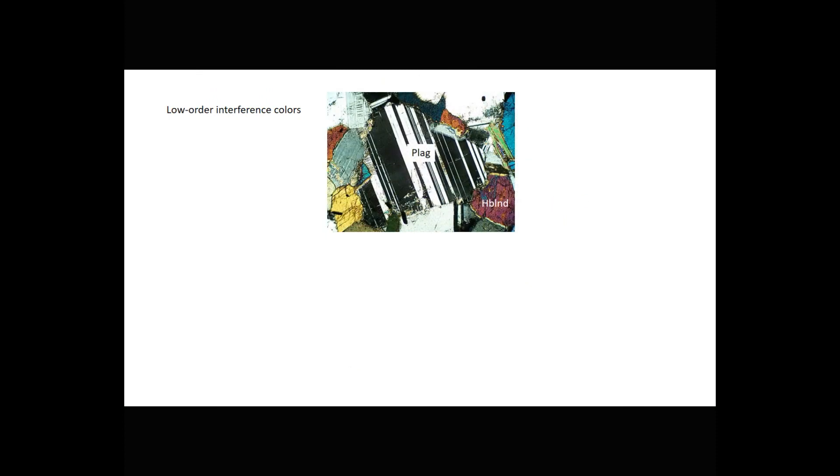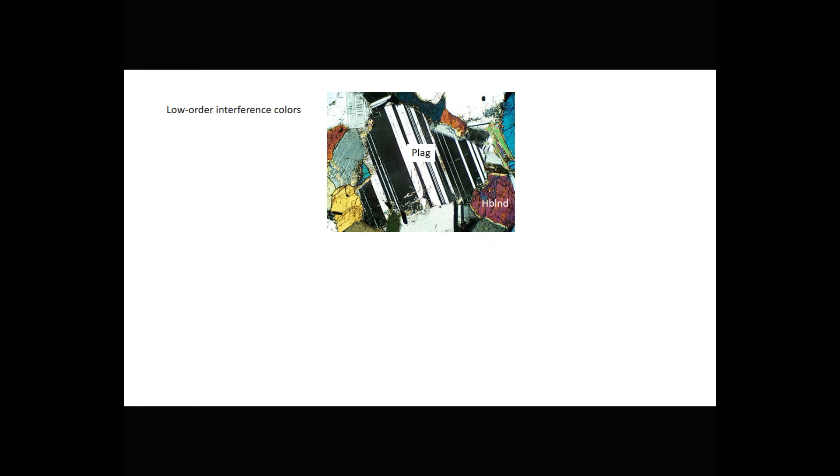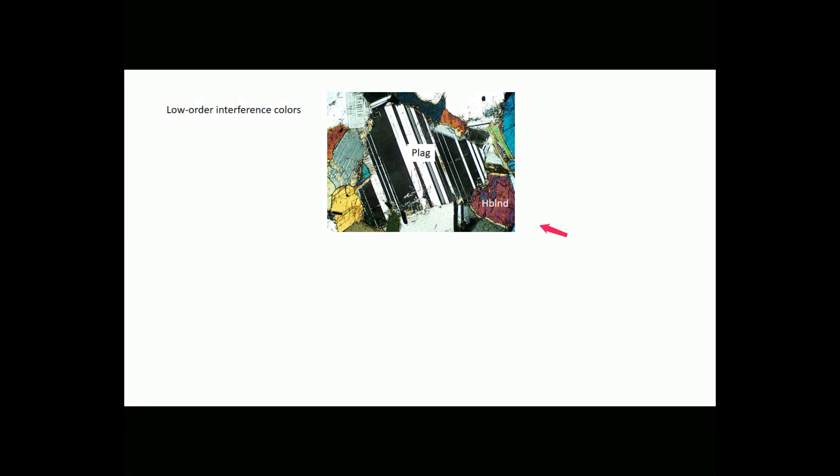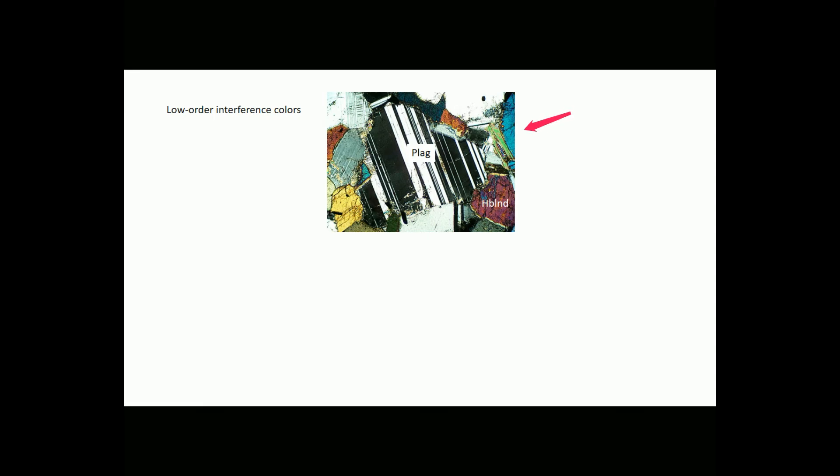Here is another example of interference colors in feldspars. This is plagioclase showing typical zebra-stripe twinning. The interference colors vary from black to white to gray as you rotate the stage. The thin section also contains hornblende, which shows higher-order, second- or maybe third-order interference colors. And there is one flake of mica up here, which also shows higher-order interference colors.